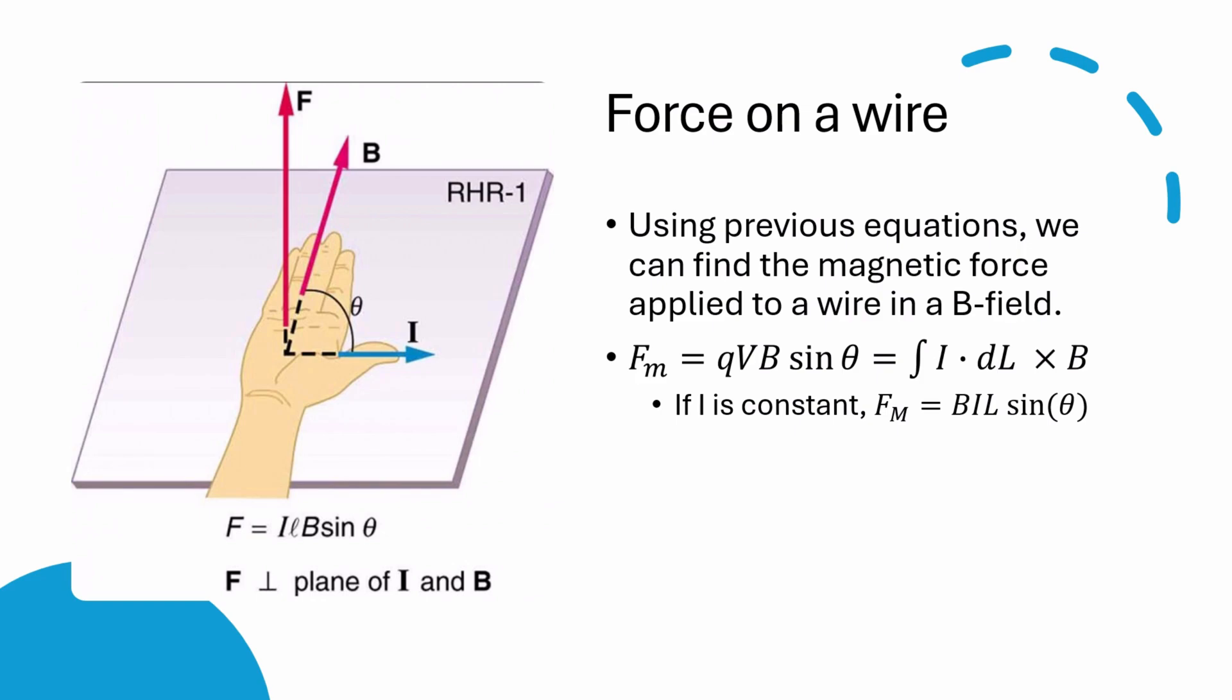I won't go too in-depth right now, but an example application of this formula is when you have two parallel wires. Under F equals BIL, you can find that parallel wires feel a force towards each other, and wires with current going in opposite directions repel.